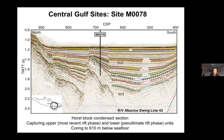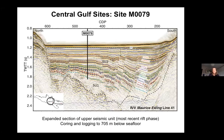Our first drill site was on a horst block, giving us a relatively condensed section in the Gulf of Corinth capturing two of the rift phases, drilling as deep as about 600 meters below seafloor. We also had a companion site, Site 79, where we looked at a more expanded section of the most recent rift phase, drilling down to 700 meters below seafloor.